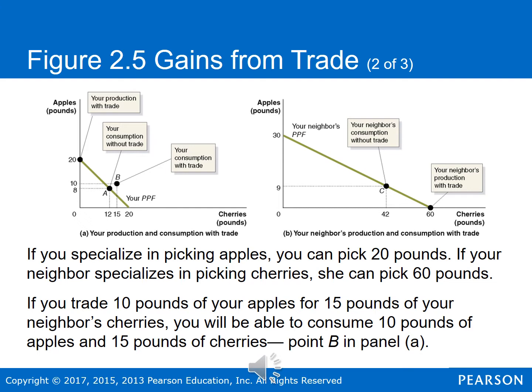Remember, you're not able to produce to the right of the production possibility frontier — you can only produce on that line or to the left of it. So by trading, you've made yourself better off than you ever could by just not engaging in trade and picking apples and cherries yourself.